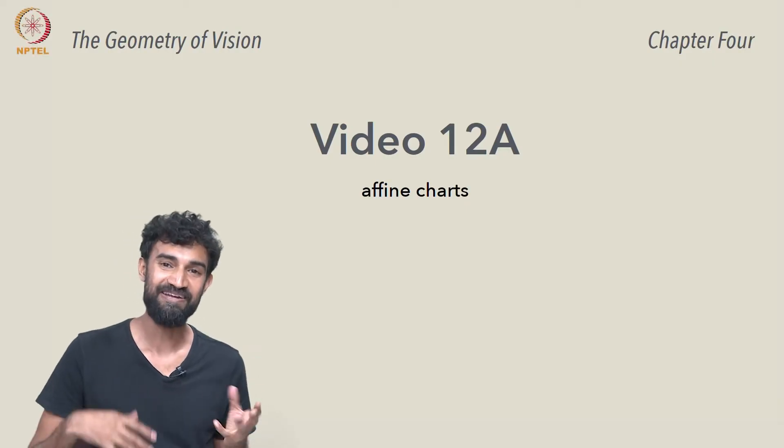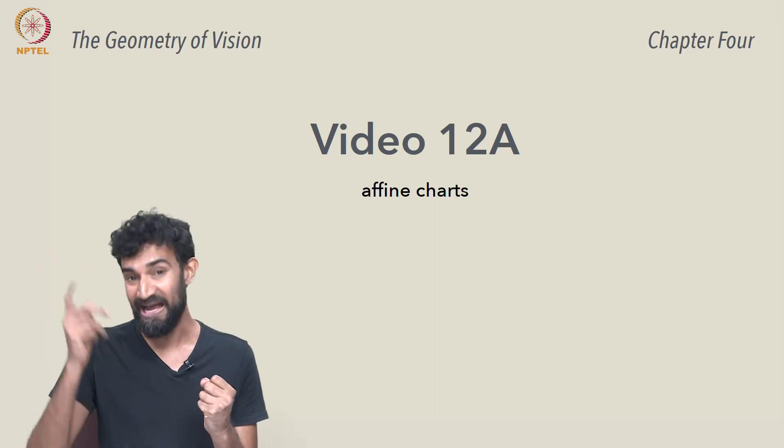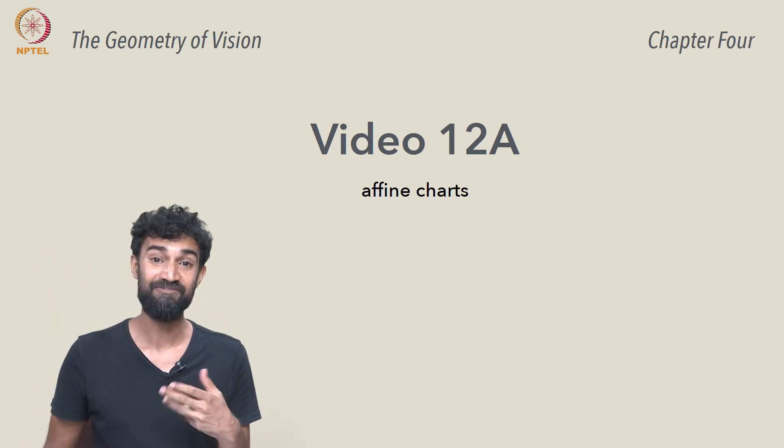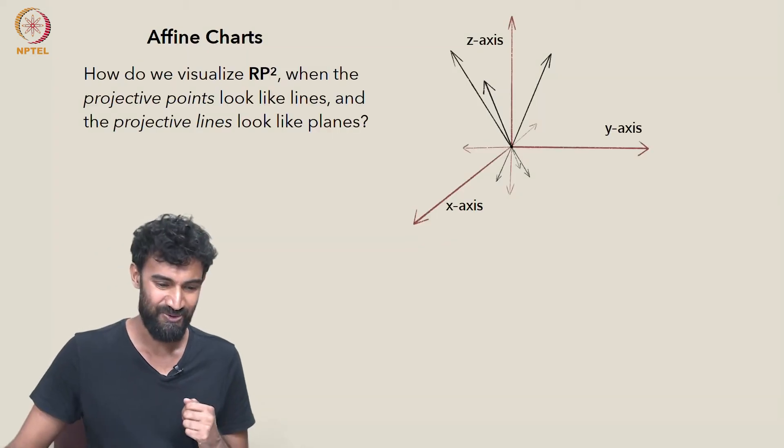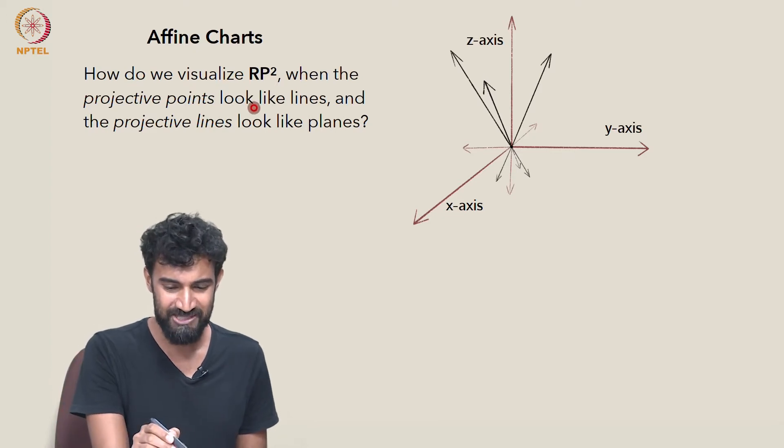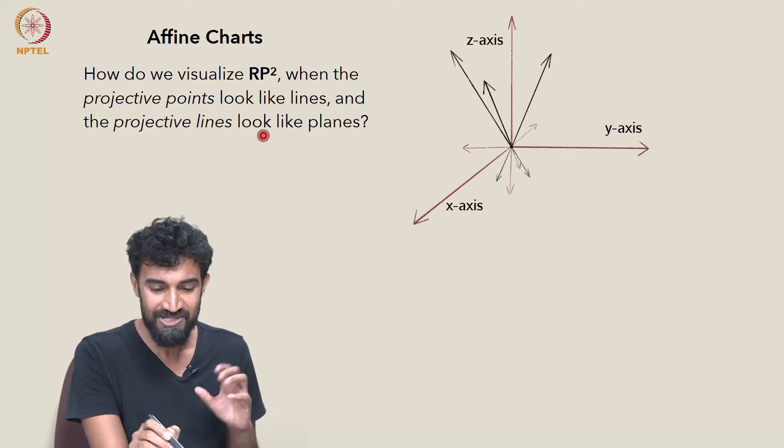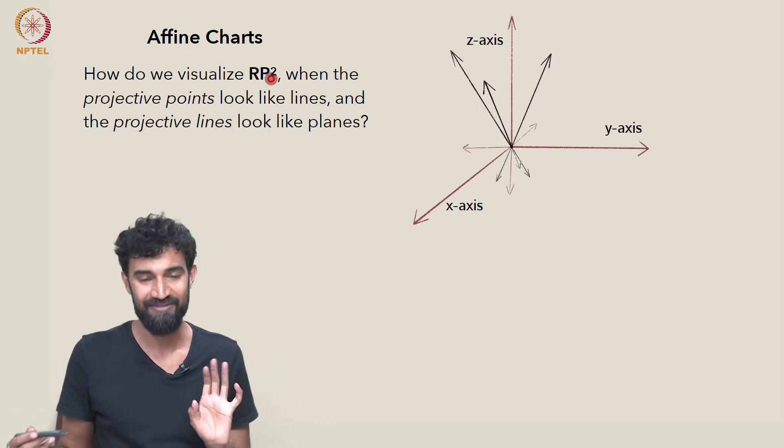Now, I can't blame you if you're finding it confusing that projective points are actually lines through the origin and projective lines are actually planes through the origin. So when projective points look like lines and projective lines look like planes, how do we go about visualizing RP²? It seems kind of confusing.